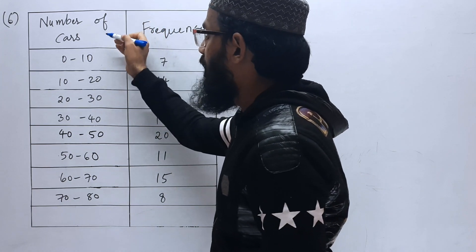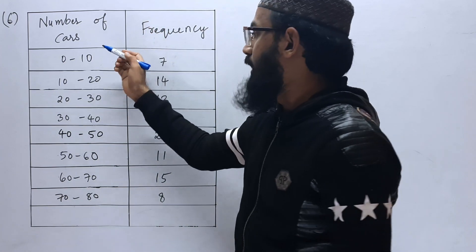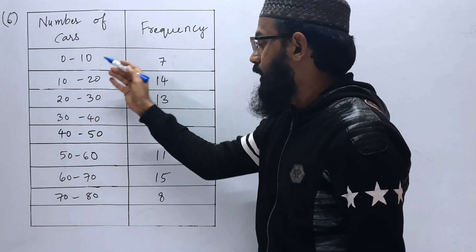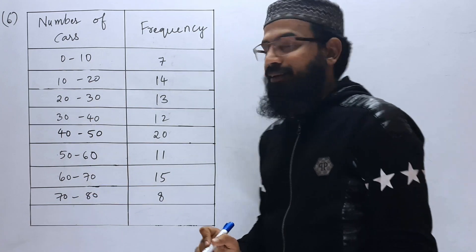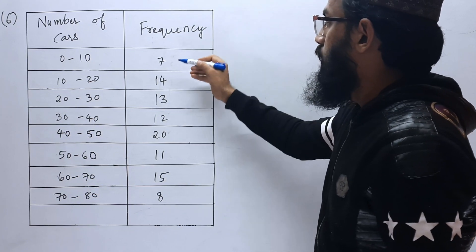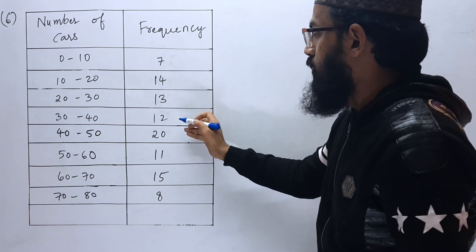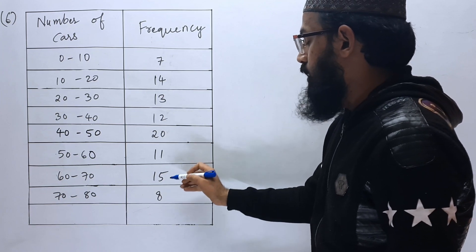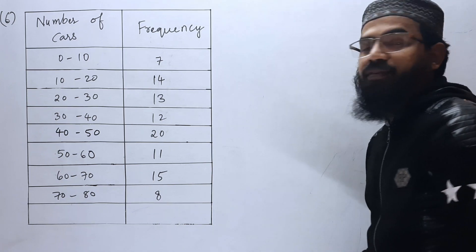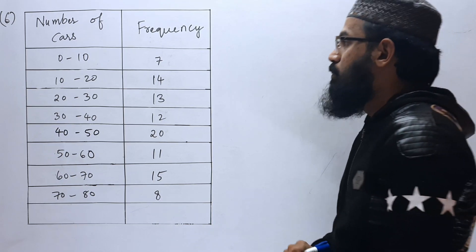Given information is number of cars, the class intervals 0 to 10, 10 to 20, up to 70 to 80, and frequency: 7, 14, 13, 12, 20, 11, 15, and 8. What we have to find, we have to find mode.